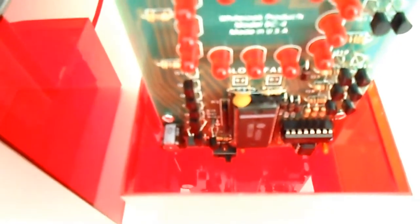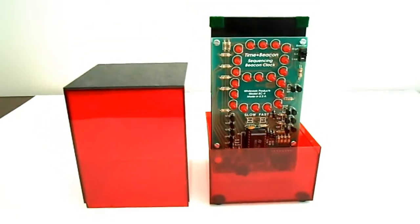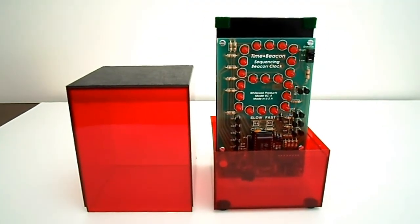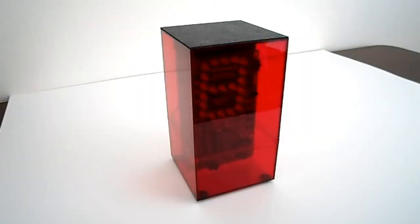Now there's a slide switch on the bottom here that is used for setting the BC-4 for use in either 12 or 24 hour formats. And that's a quick look at the inside of the BC-4.